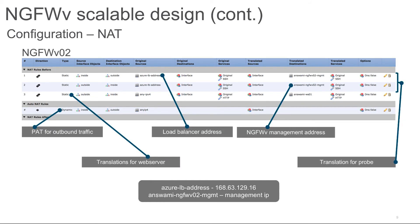The same configuration applies for firewall 2 as well — everything is the same except the management address. In the previous example the management address of firewall 1 was used, but here the management address of firewall 2 is used.